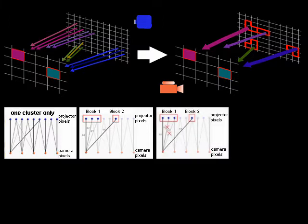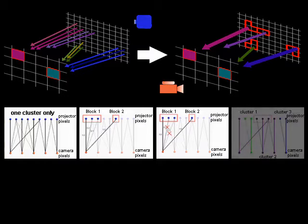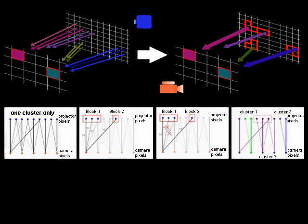The amount of projector pixels that can contribute to a specific camera pixel is restricted per block. It is straightforward to filter out lower luminance values in each block. Once the clusters are cut, a compensation can be performed separately for each cluster.